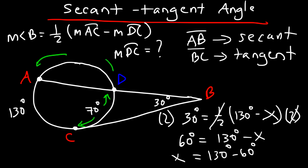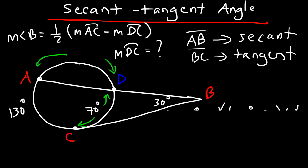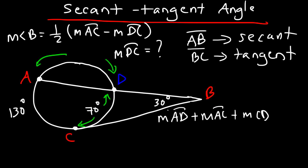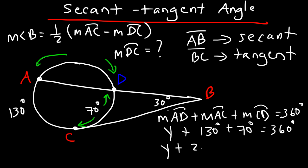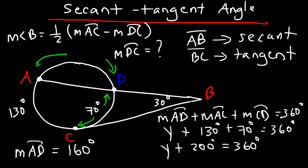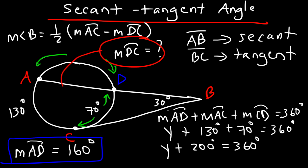To find arc AD, note all three arcs must sum to 360 degrees. So arc AD + arc AC + arc CD = 360. With arc AC = 130 and arc CD = 70, arc AD = 360 − 200 = 160 degrees.